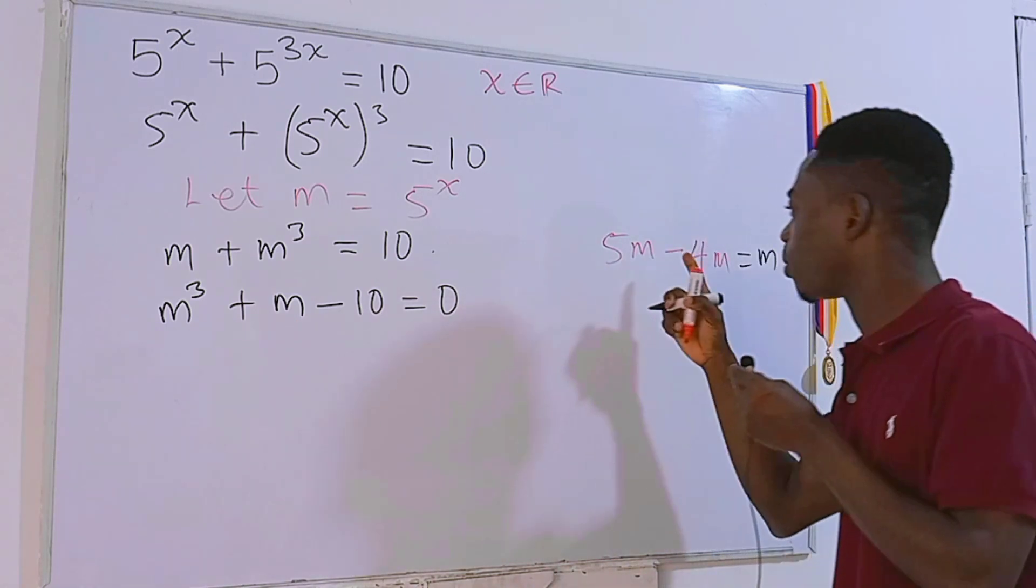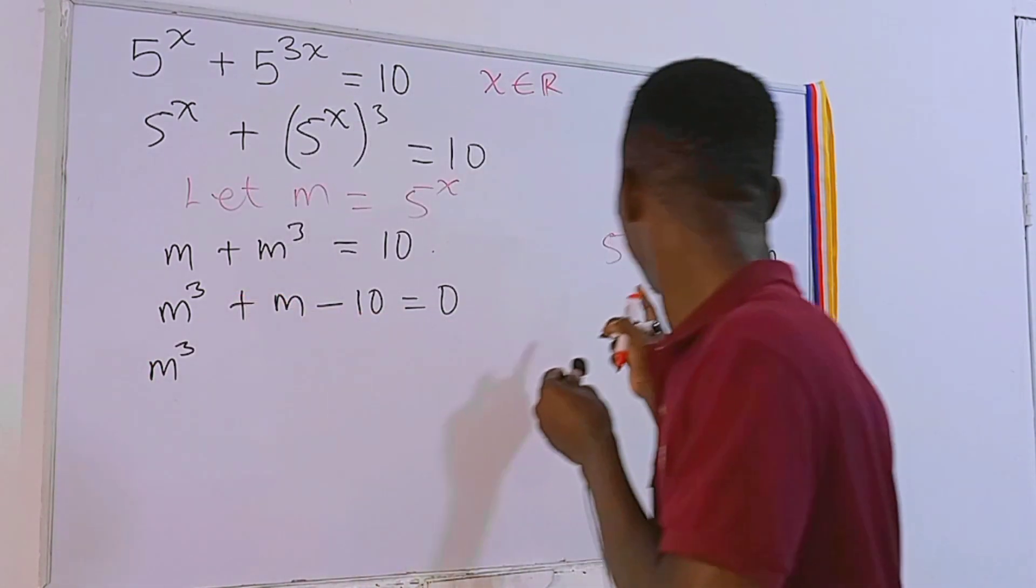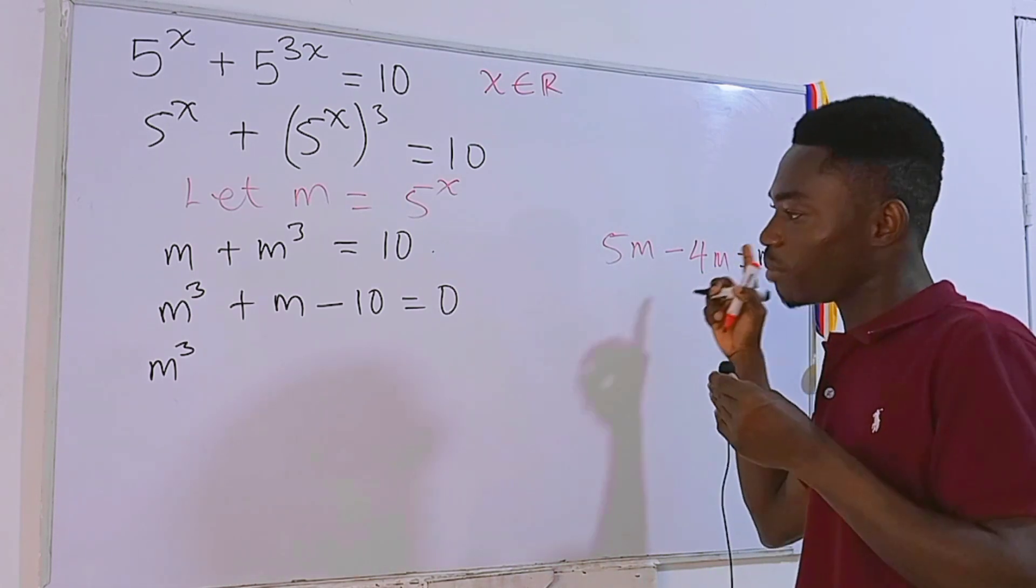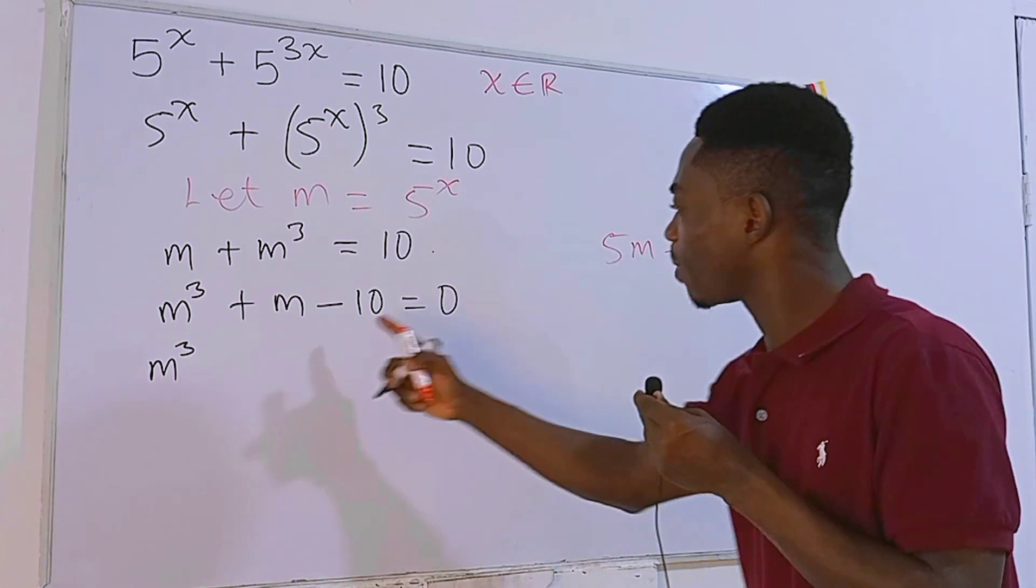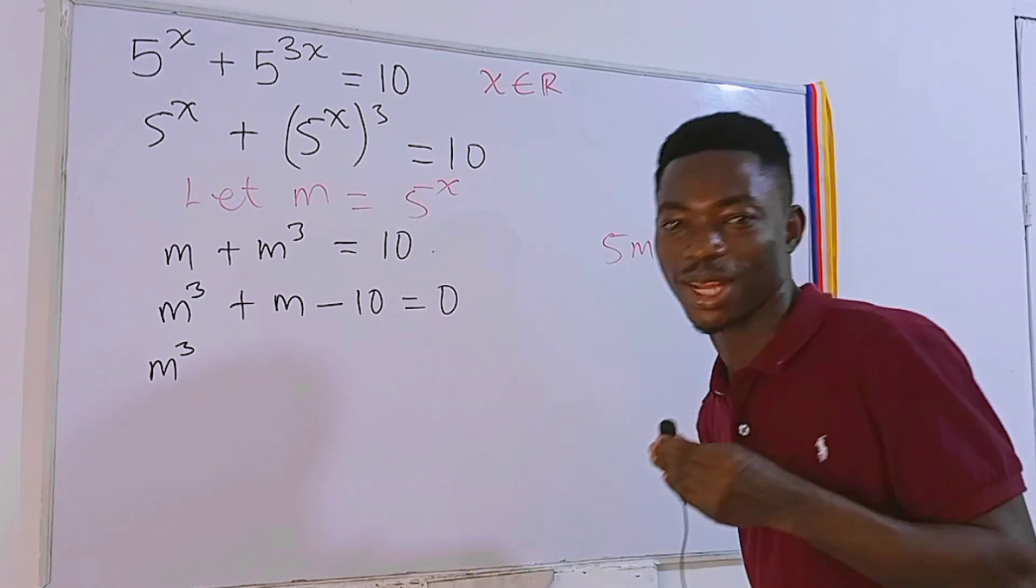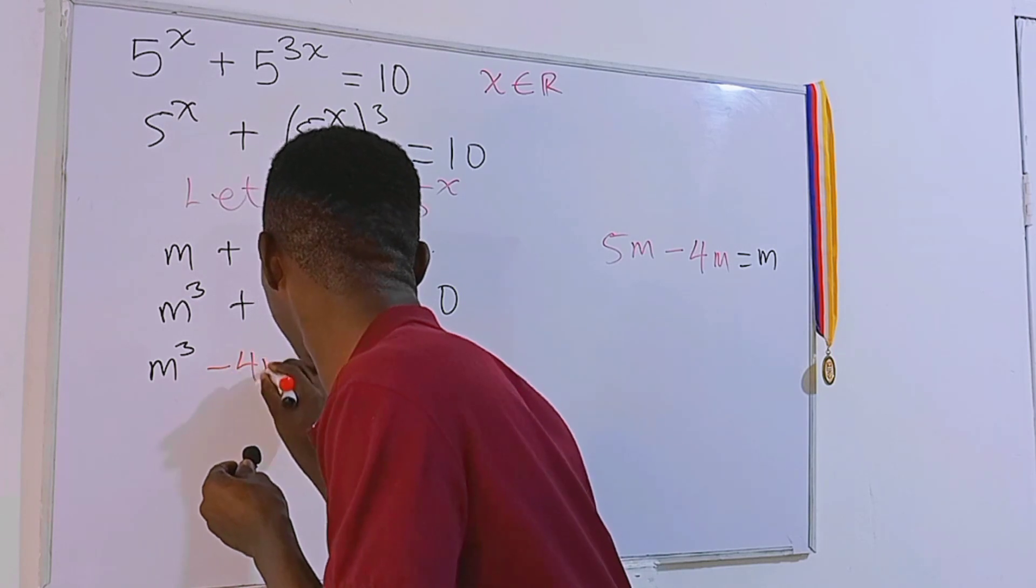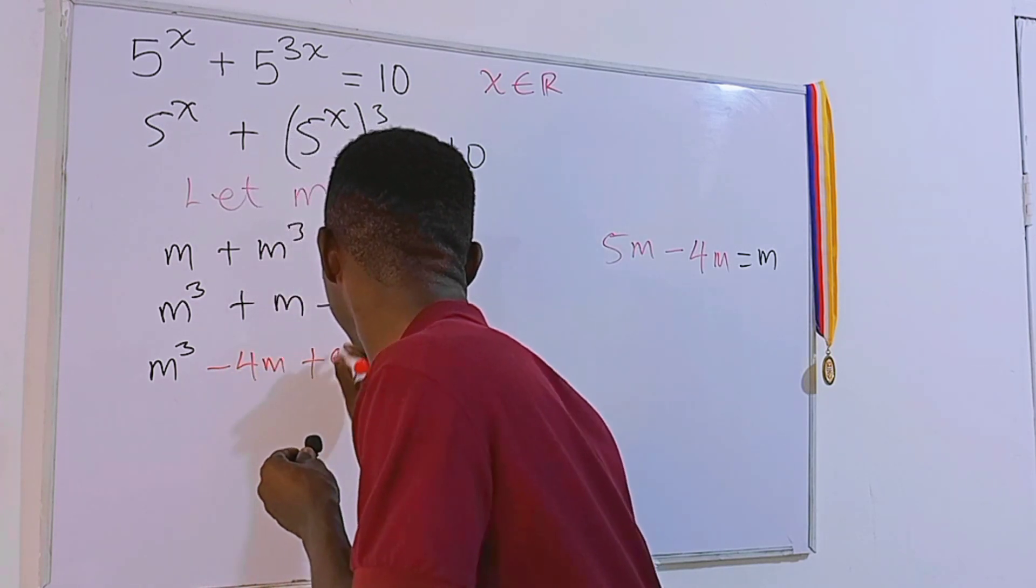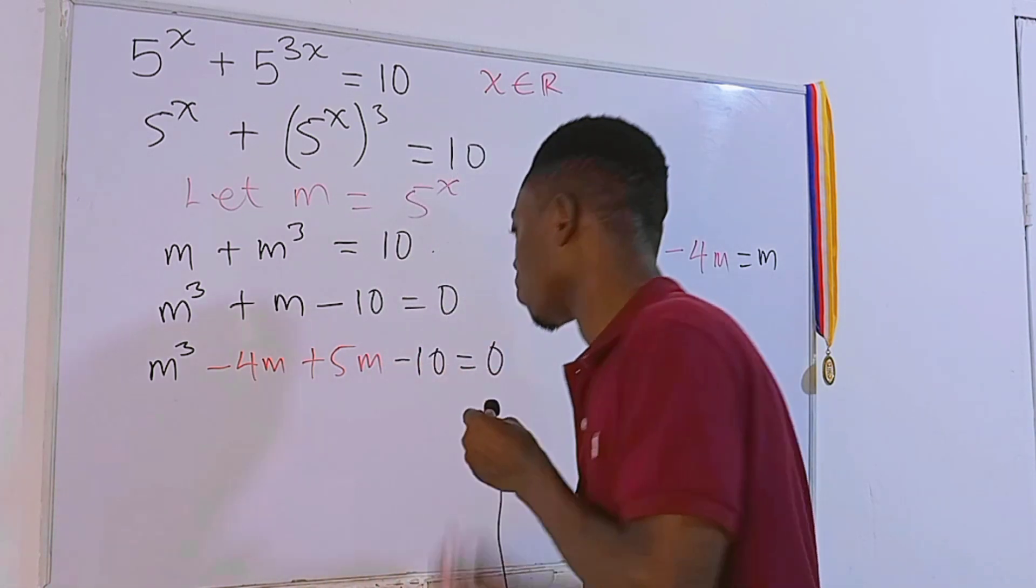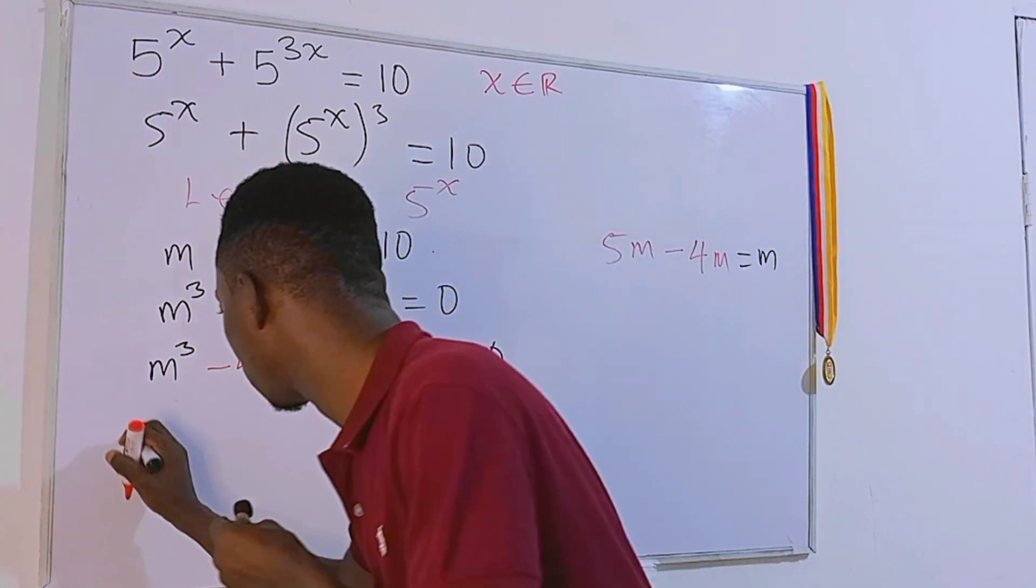So in place of this m right here, I'm going to put this. We have m³, but instead of writing 5m first, I'm going to write -4m because if this one comes before this, then you can easily factorize. So that will be pretty much easy. Cool. So we have -4m, then +5m, minus... plus 10 equals 0.